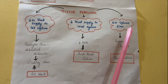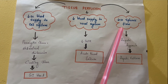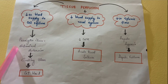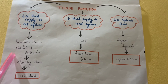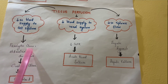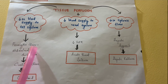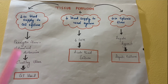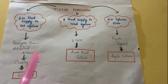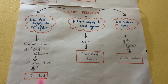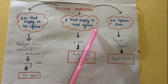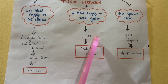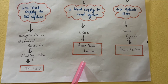Impaired tissue perfusion affects multiple organ systems. In the GI system, reduced blood supply causes ischemia to the gut mucosa, leading to a curling ulcer and GI bleeding. In the renal system, decreased blood supply reduces the glomerular filtration rate, ultimately resulting in renal failure.